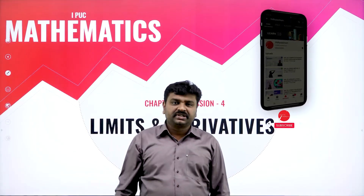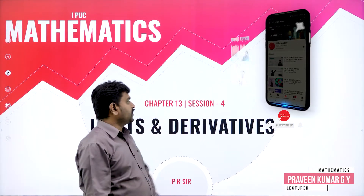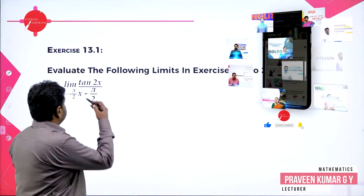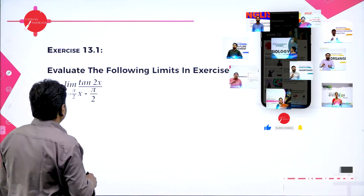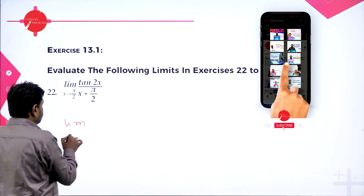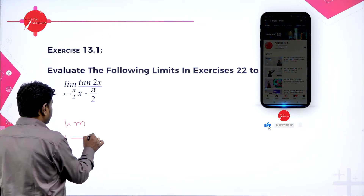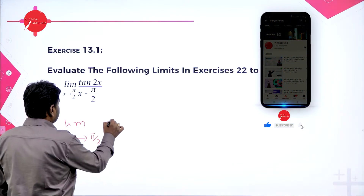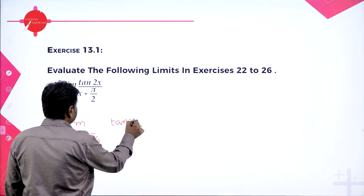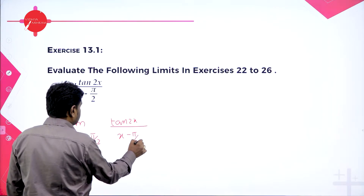Welcome to the session, dear students. Today we will continue with limits — exercise 13.1. We have the limit as x tends to 90 degrees, that is π/2, of tan 2x divided by (x minus π/2).